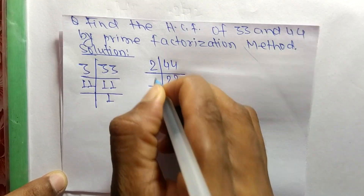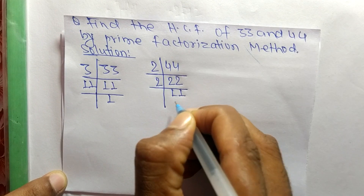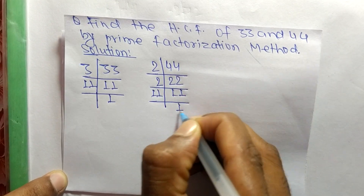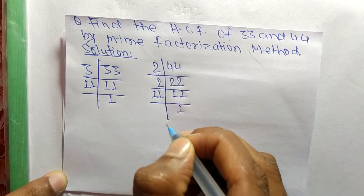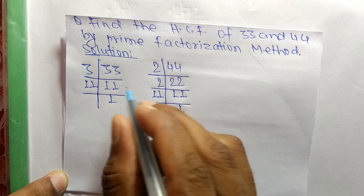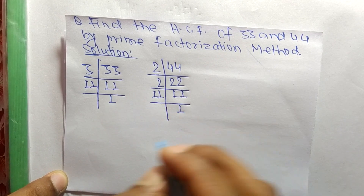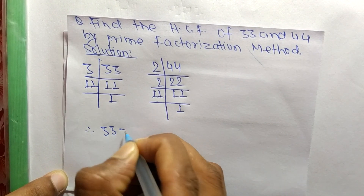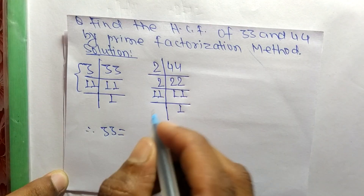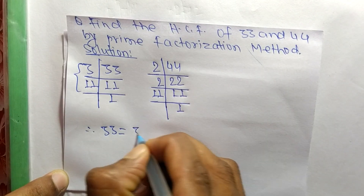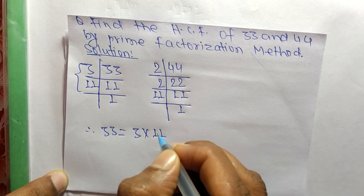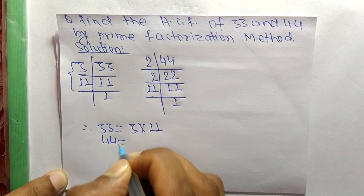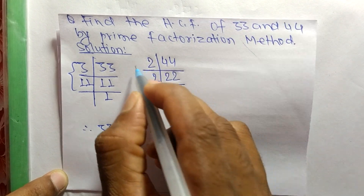Continuing for 44: 2 times 11 equals 22, and 11 times 1 equals 11. From these prime factors we can write: 33 is equal to 3 times 11, and 44 is equal to 2 times 2 times 11.